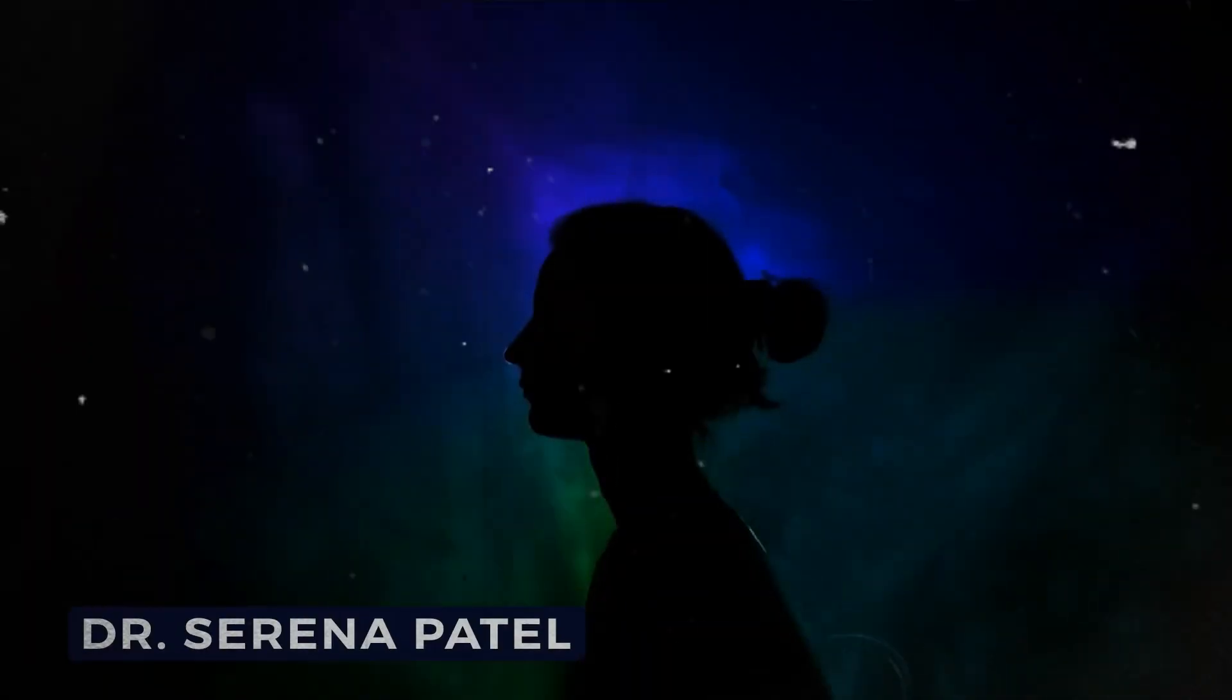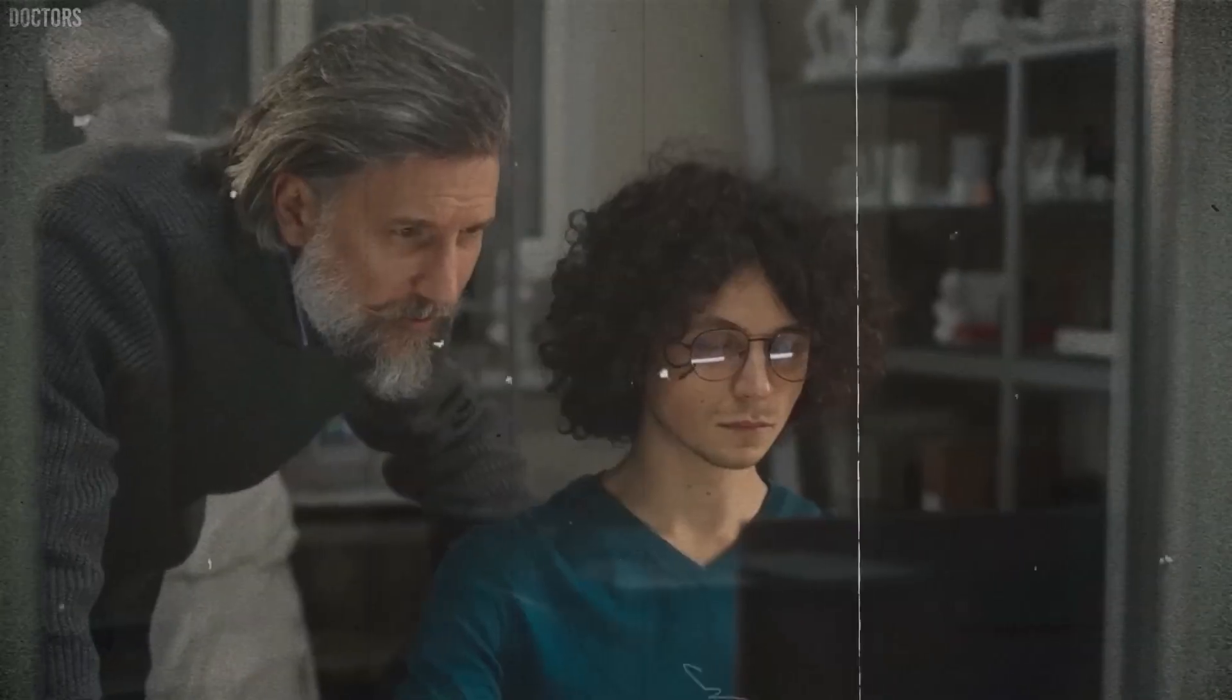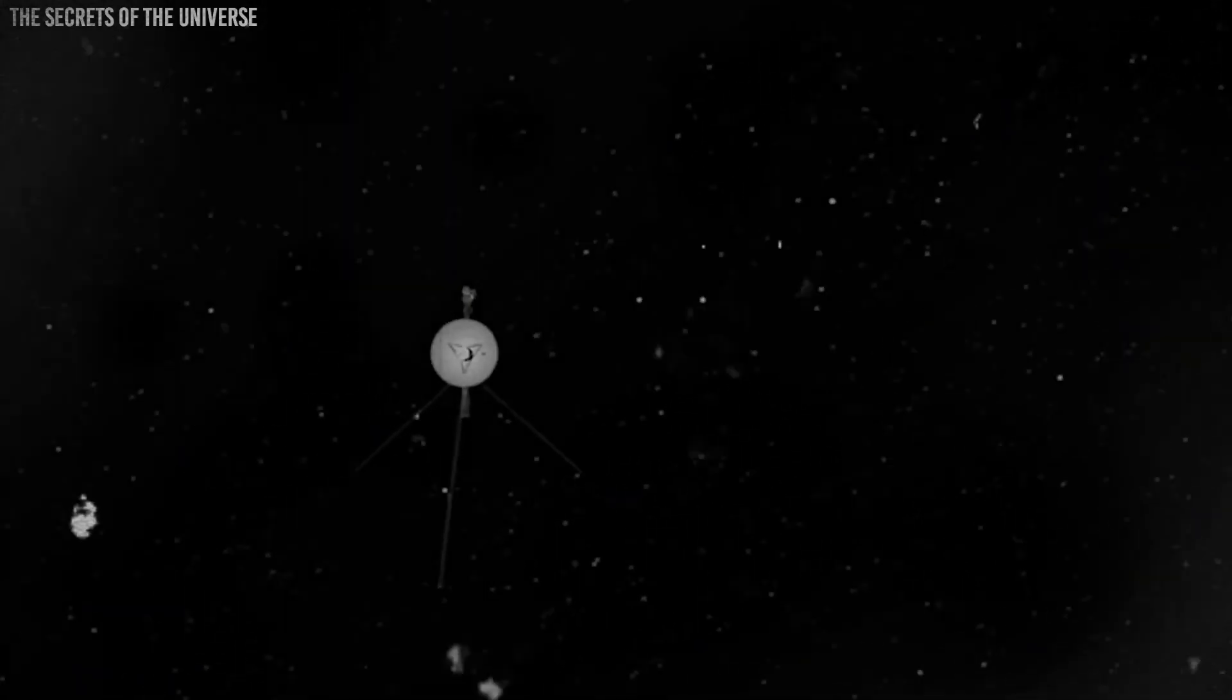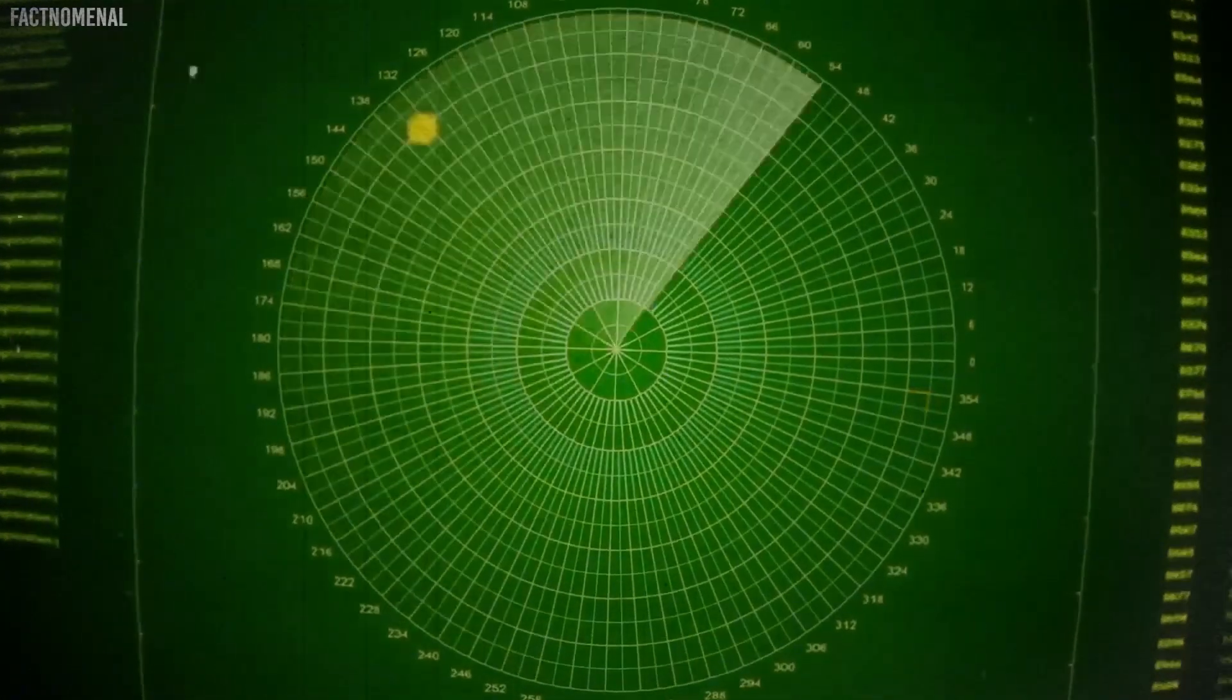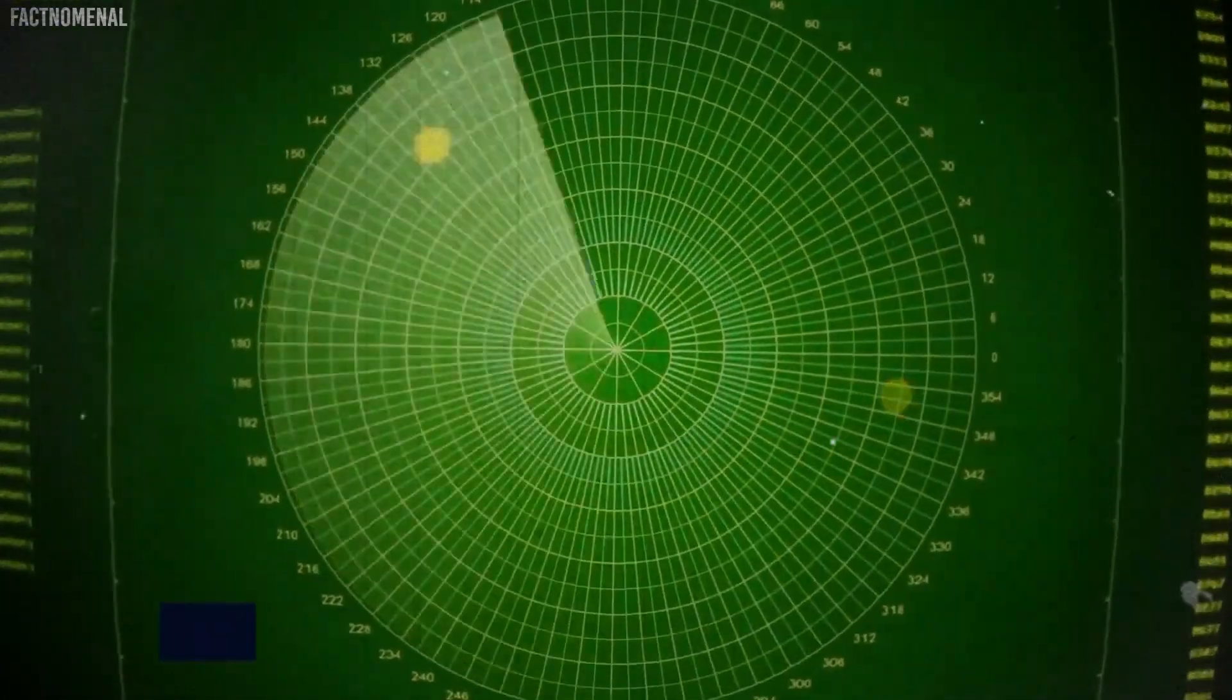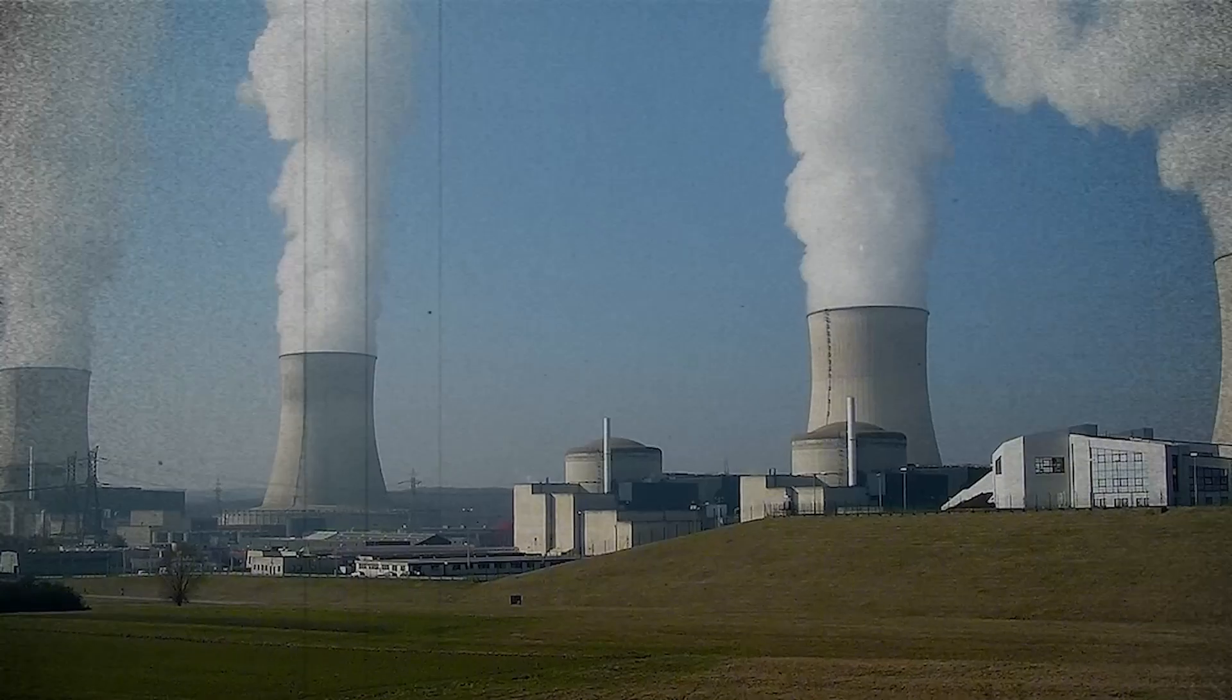After that, Voyager 1 continued its journey toward the outer edge of the solar system. Voyager 2, which took a different path, flew by Uranus and Neptune, destinations that Voyager 1 never reached, and took detailed photos of both planets.